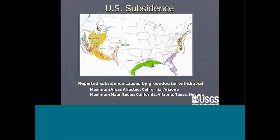Scoping down to the United States, you can see all those dots in the West. We use a lot more groundwater in the West than on the East Coast. Maximum areas affected are in California and Arizona, and unfortunately we're in the lead for maximum magnitudes. There's some subsidence in the Gulf Coast — those are coastal areas where the problem is particularly bad due to storm surges, high tides, and sea level rise. In the Chesapeake Bay, rates are small but it's one of the world's highest sea level rise areas, so even small subsidence is a big problem.